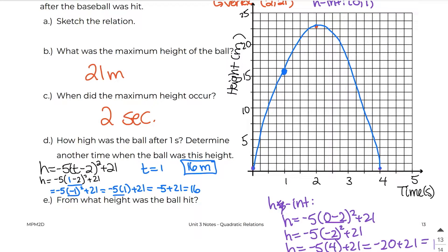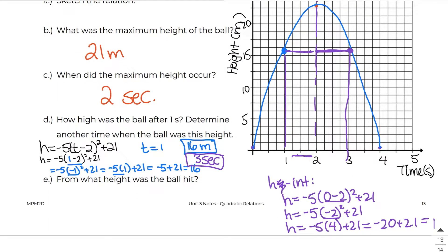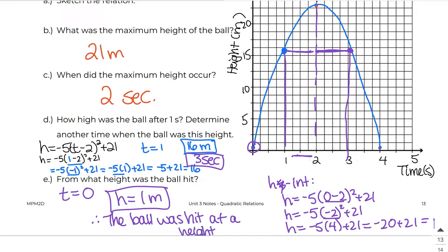Determine another time when the ball will reach this height of 16 meters. We know that t equals 1 is 1 second away from the axis of symmetry at t equals 2. So another second past the axis of symmetry gives us t equals 3 seconds. The last question asks from what height was the ball hit — that's when time equals 0, which we already found from the h-intercept. The height would be 1 meter.